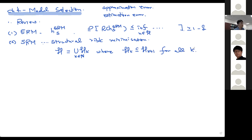Instead of finding one hypothesis that works best in the big hypothesis set H with respect to a given sample, SRM tries to find two things at the same time: a good H_K in terms of small estimation error, and a hypothesis with small approximation error. So instead of finding one hypothesis in H, we are finding a model H_K and a hypothesis in that model at the same time.